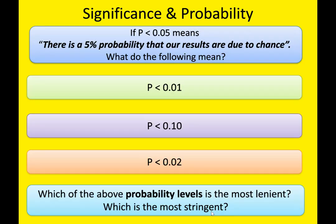p < 0.10 is the most lenient because we're saying we're happy our results are significant, but there's a 10% probability the results are due to chance. With p < 0.01, we're saying our results are significant and there's only a 1% probability they're due to chance. So p < 0.01 is the most stringent — our strongest level of probability — and p < 0.10 is the most lenient. p < 0.02 is relevant when using a two-tailed non-directional hypothesis, but the key ones to focus on are 0.01 and 0.10.